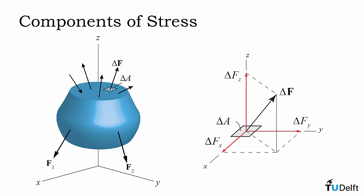If we zoom in on that and then apply a coordinate system to that surface where Z is normal to the surface and X and Y are parallel to the surface, we can see that the resultant force, delta F, can be broken down into a normal component, delta Fz, and two components parallel to the surface, delta Fx and delta Fy.